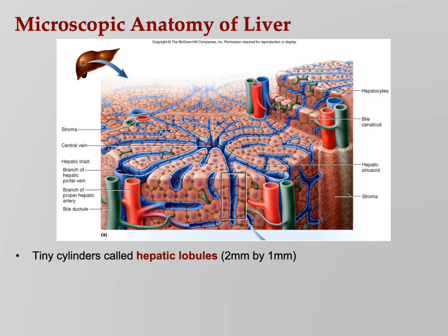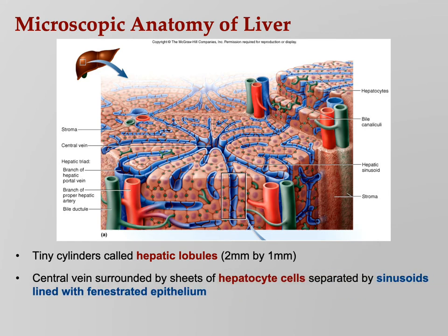Don't mix up hepatic portal vein with hepatic vein — hepatic portal vein is going in, hepatic vein goes out. The sinusoids here have fenestrated epithelium because we've got big proteins to let in and out of the blood, so we have specially wide capillaries. Blood is filtered by hepatocytes. The liver also filters stuff out — people say it detoxifies.